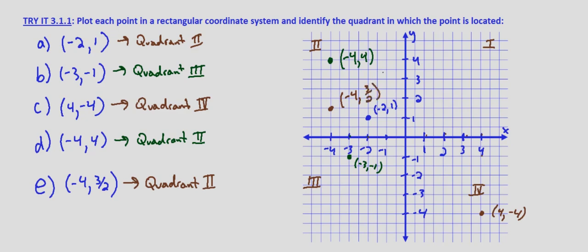This is just an introduction to the rectangular coordinate system. For a point (x, y), x determines where we're going left and right, and y determines where we're going up and down — we just count the number of units. To the left if x is negative, to the right if x is positive, down if y is negative, and up if y is positive.